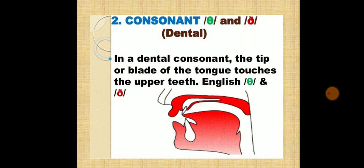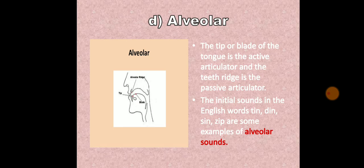Dental: the tip of the tongue is the active articulator and the upper front teeth are the passive articulators. For example, the initial sounds in the English words thin and den, that is 'th' and 'dh'. Alveolar sounds: the tip or the blade of the tongue is the active articulator and the teeth ridge is the passive articulator. The initial sounds in tin, din, near, sin, zip are alveolar sounds.